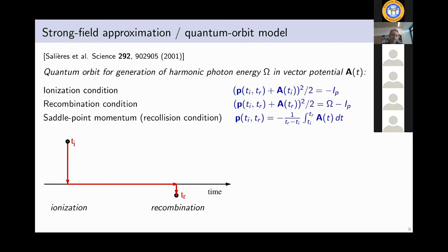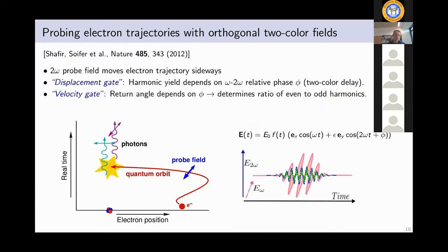Okay, now the question is, can we actually set up a scheme to measure these times? And the answer is yes. Already many years ago, Dudovich and co-workers introduced this two-color scheme where we have high harmonic generation by a fundamental field with a strong fundamental with frequency omega and a weak two-omega field polarized in the perpendicular direction. So this additional field somehow probes the electron motion. It moves the electron trajectory sideways in such a way that the electron might miss the parent ion when it comes back. So only for a certain suitable two-color delay, that's the relative phase between the two colors, will you have the situation that the electron can come back nicely and there you have a high harmonic yield. That's what they have called the displacement gate.